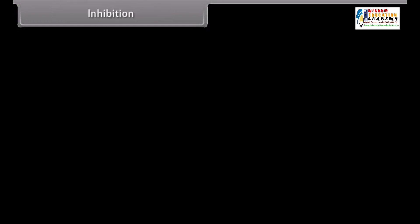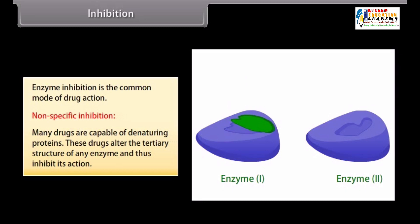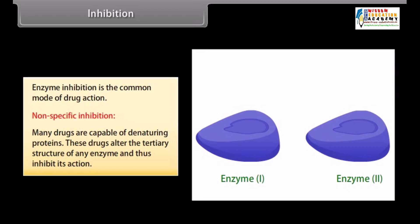Enzyme inhibition is the common mode of drug action. Non-specific inhibition: many drugs are capable of denaturing proteins. These drugs alter the tertiary structure of an enzyme and thus inhibit its action. For example, heavy metal salts, alcohol, formaldehyde, and phenol inhibit enzymes non-specifically.